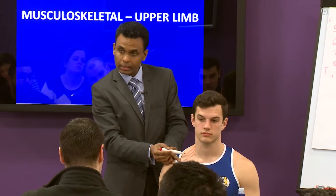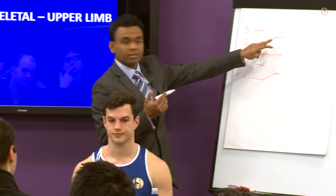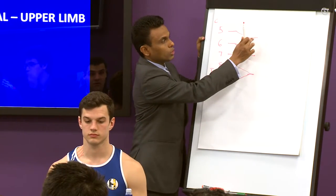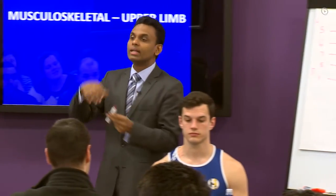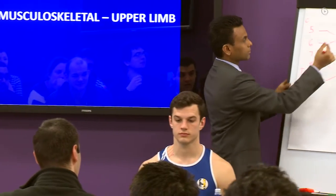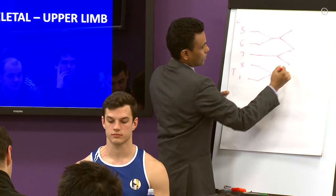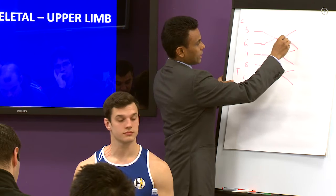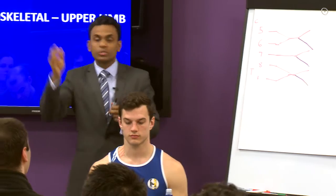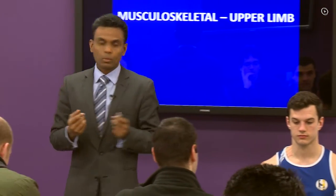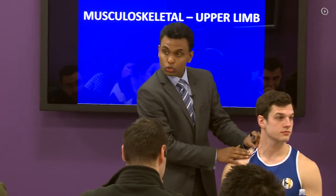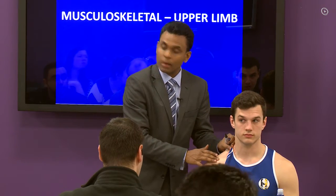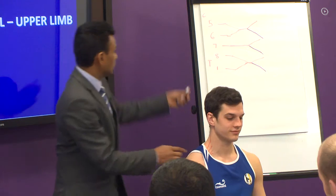The three trunks lie in the supraclavicular region. Think of it like a tree: root, trunk, then divide. Each trunk divides into an anterior and a posterior division. The posterior divisions will be drawn in a different color for clarity. These divisions lie behind the clavicle — in the supraclavicular fossa.